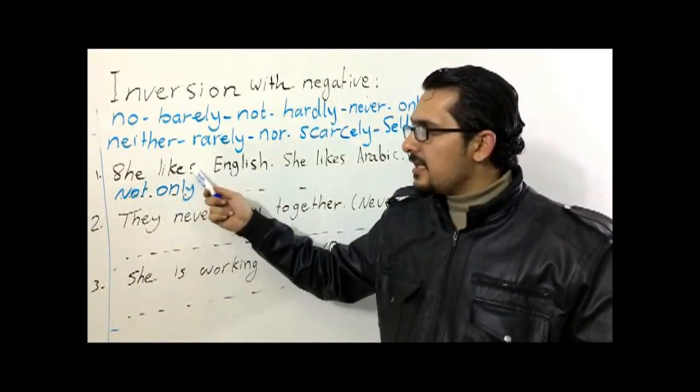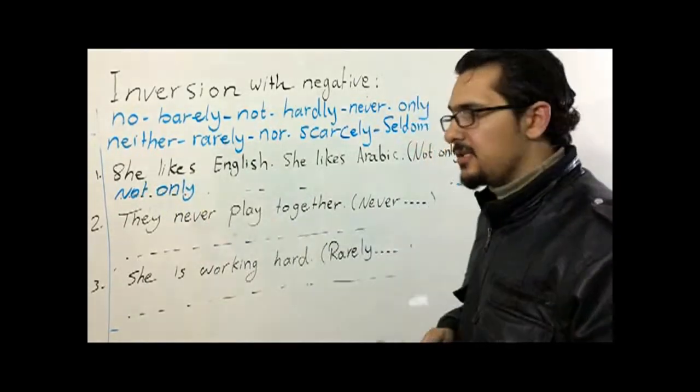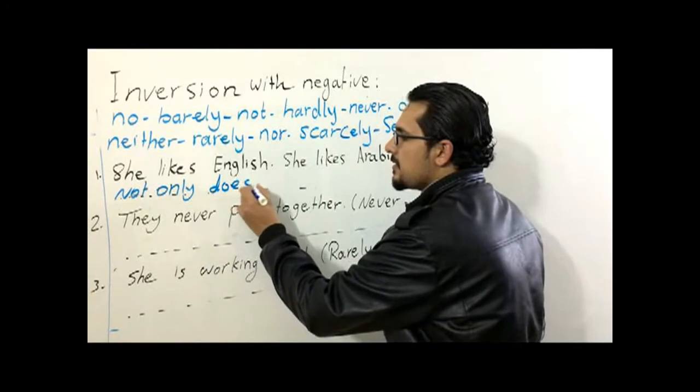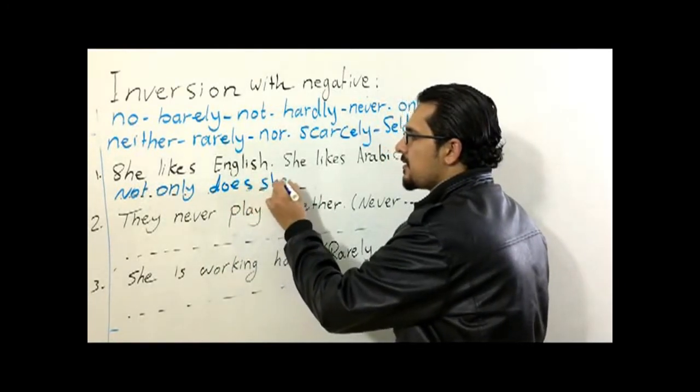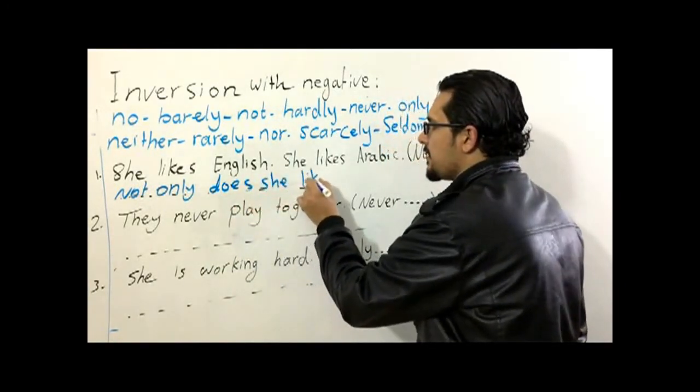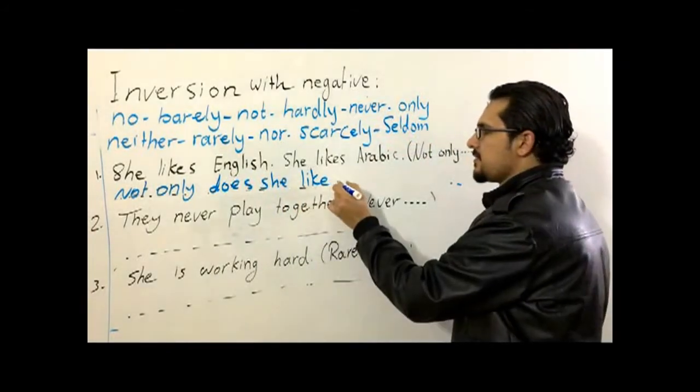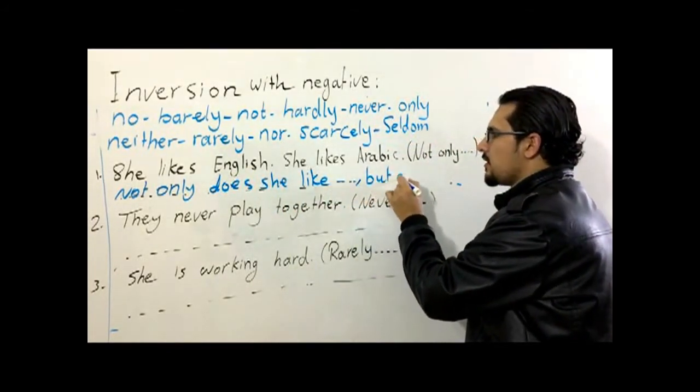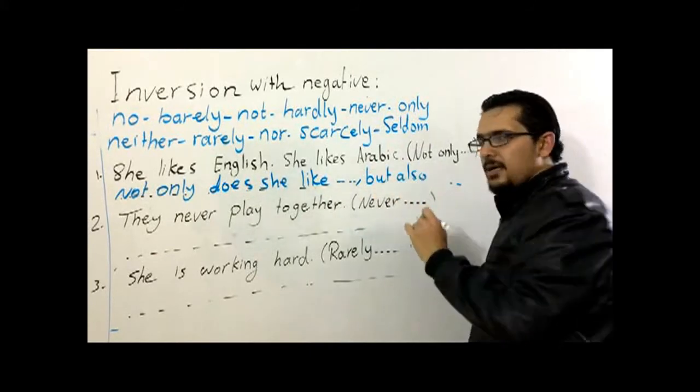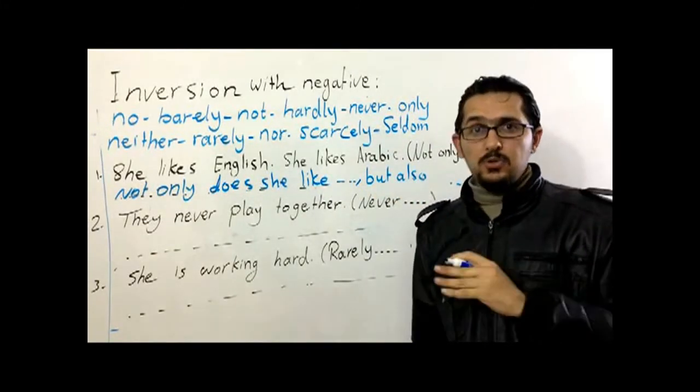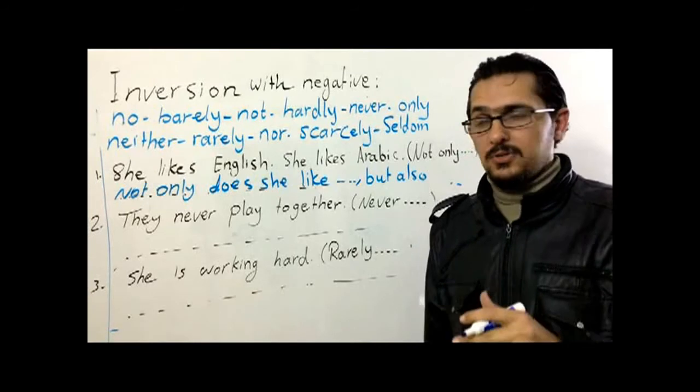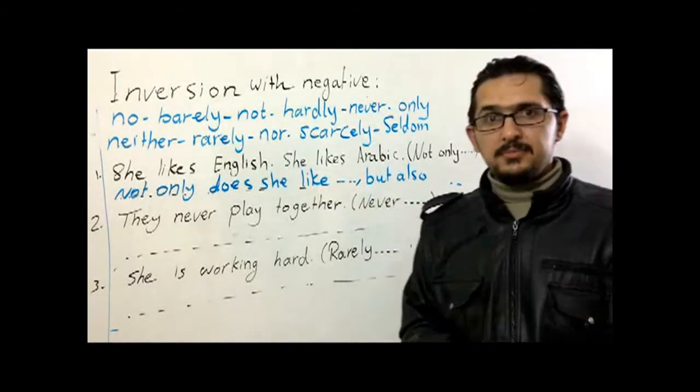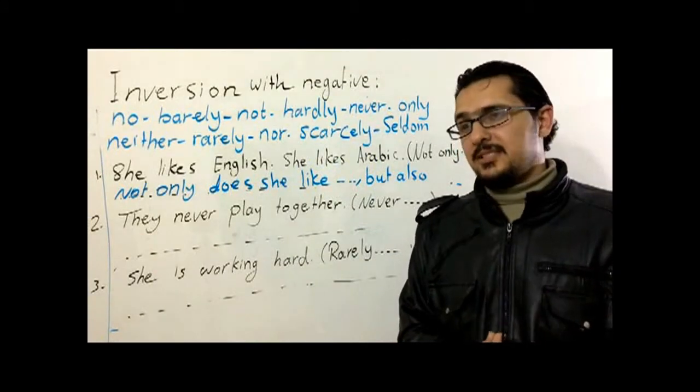We're going to say not only does she like English. Yes, not only does she like English, but also. And remember, I can't say also without but. I have to say but also. But also she likes Arabic. Yeah, it's tricky sometimes.